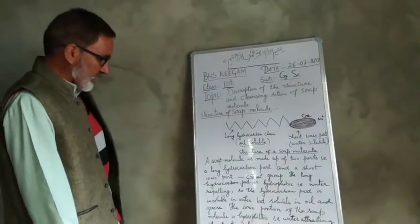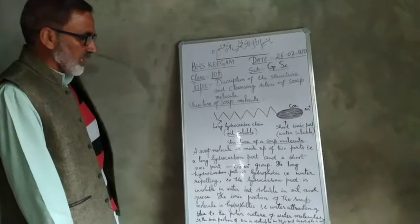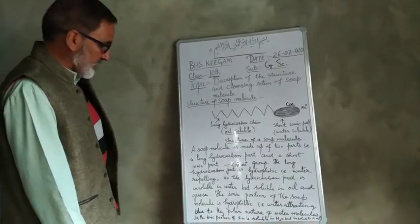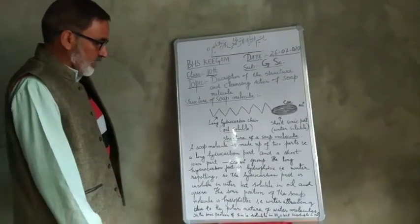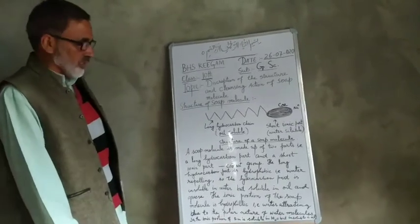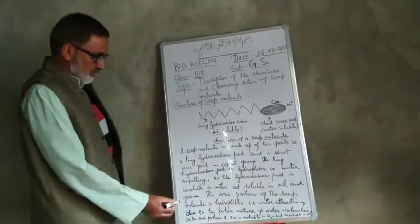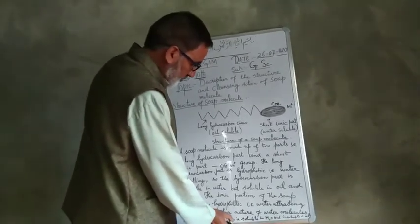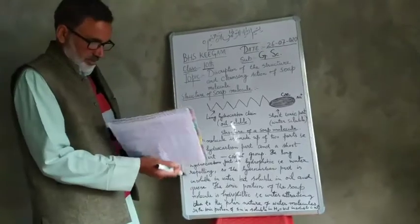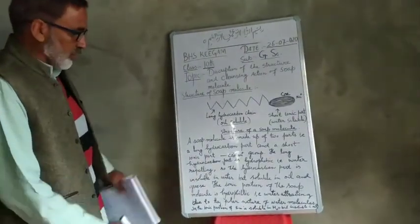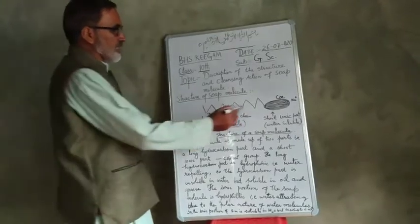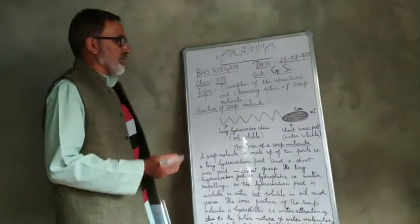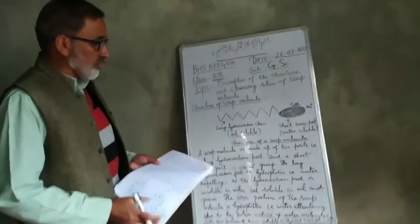The ionic portion is hydrophilic, meaning water-attracting, due to the polar nature of the water molecule, which is attracted to it. You know that water is polar in nature. This is why the ionic portion of the soap molecule is soluble in water and insoluble in fat and oil.